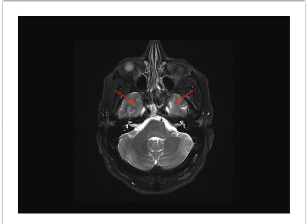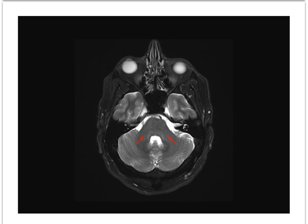By this level, the inferior portion of the temporal lobes are coming into view. The middle cerebellar peduncles are bulky fiber tracts that contribute to the prominent belly of the pons. Slight difference in signal intensity reflects the tegmentum of the pons.